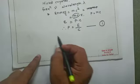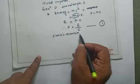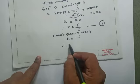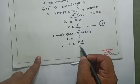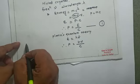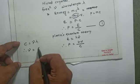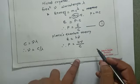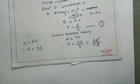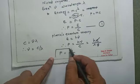According to Planck's quantum theory, energy E = hν. Therefore p = hν/c. We know the relation between velocity, frequency, and wavelength: velocity c = frequency × wavelength, so ν = c/λ. Substituting, p = hc/λc, and the c's cancel, giving us p = h/λ.